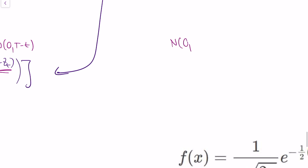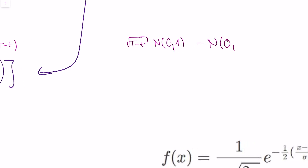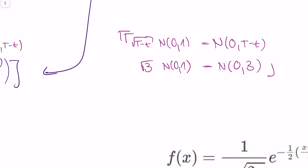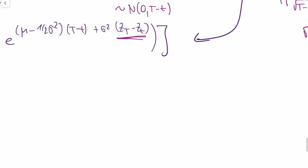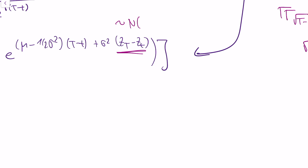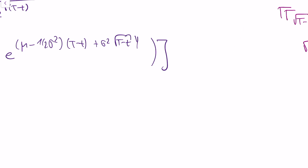I'll use a small mathematical trick: if you have a standard normal random variable with mean zero and variance one, you can scale it. Multiplying by the square root of (T minus t) gives a normally distributed variable with mean zero and variance T minus t. For instance, multiplying a standard normal by the square root of 3 yields a normal variable with mean zero and variance 3. So I substitute the Brownian motion increment with a standard normal random variable y multiplied by the square root of (T minus t).